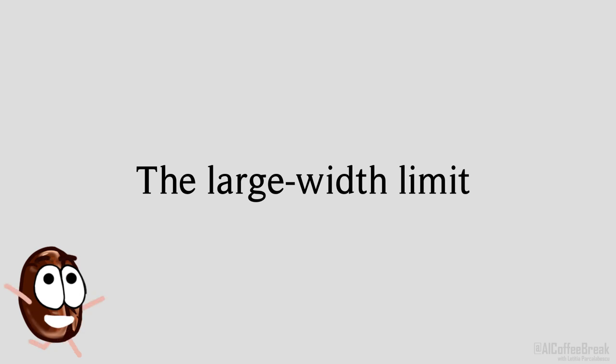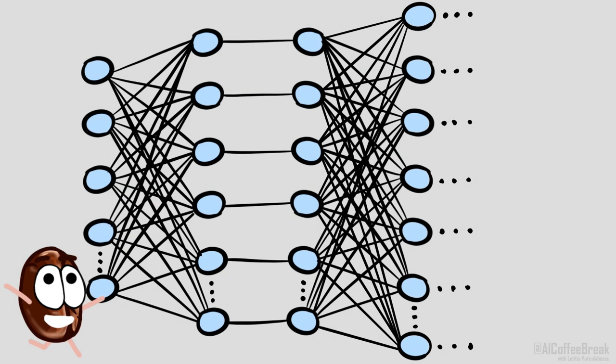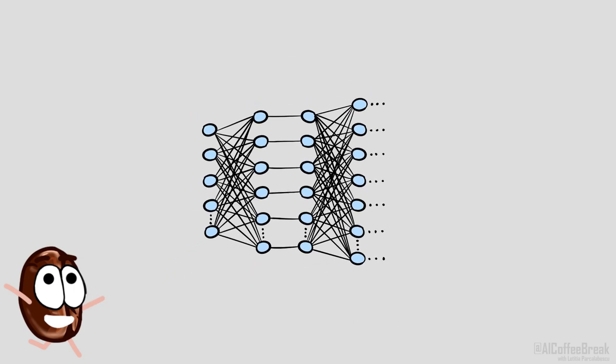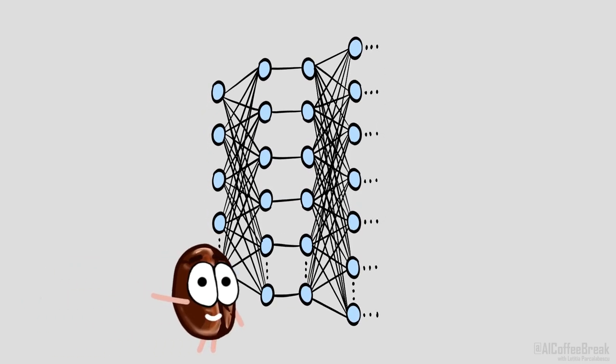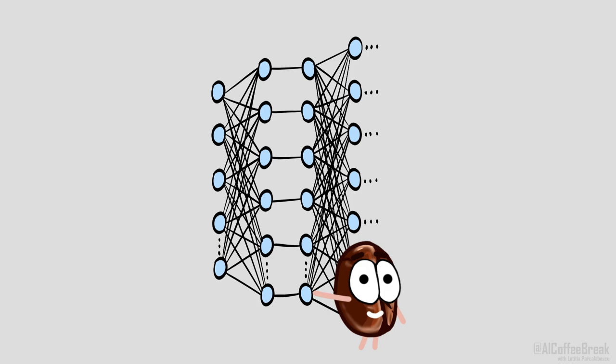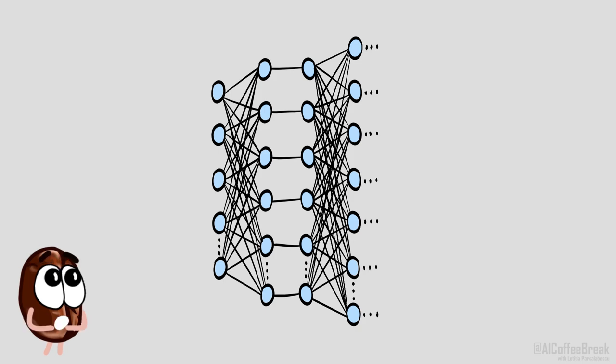So, we want to understand what happens when neural networks become macroscopic. What exactly do we mean by this? A network becomes large as the width of the network, so the number of neurons in each hidden layer, increases. With an increasing number of neurons, the network becomes more and more independent of the details and can be described by a small set of variables.